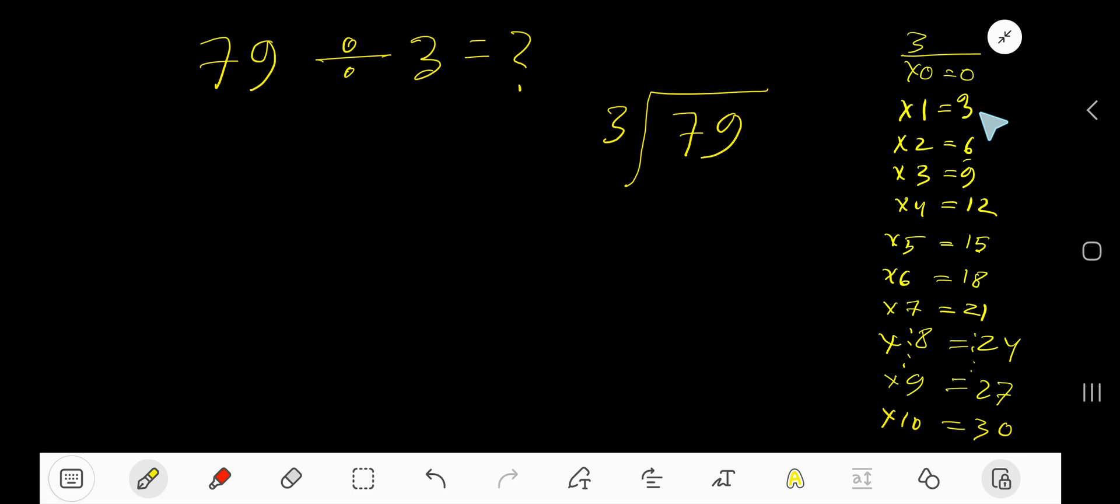To find out the multiplication table of 3, just add 3 with the previous step. 0 plus 3 is 3, 3 plus 3 is 6, 6 plus 3 is 9, 9 plus 3 is 12, 12 plus 3 is 15, 15 plus 3 is 18, 18 plus 3 is 21.